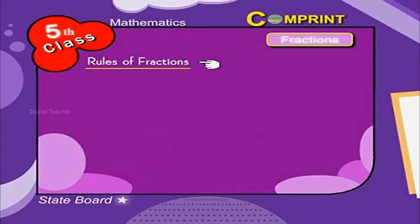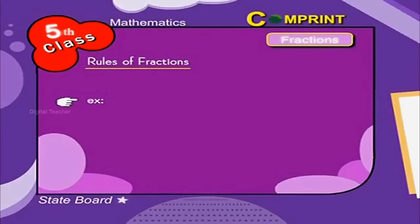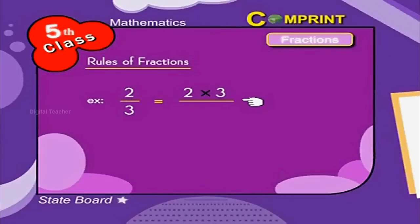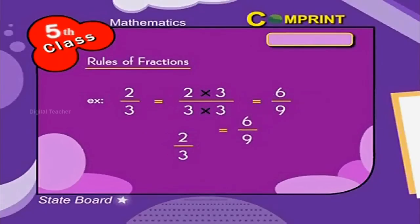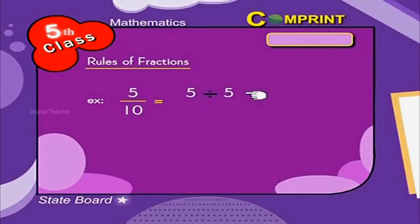Now let us learn about some rules of fractions. If the numerator and denominator of a fraction are multiplied or divided by the same number, we get its equal fraction. Look at the example: 2 by 3 is equal to 2 into 3 by 3 into 3, which is equal to 6 by 9. So 2 by 3 is equal to 6 by 9. Look at another example: 5 by 10 is equal to 5 divided by 5, by 10 divided by 5.